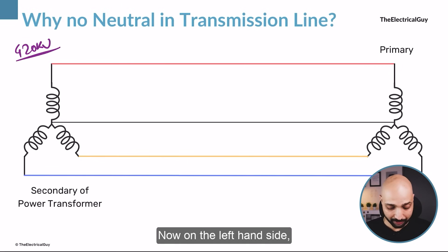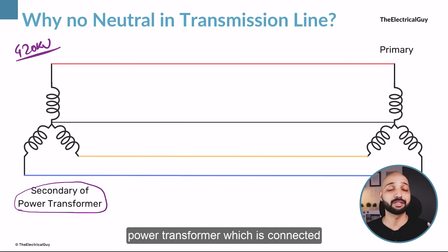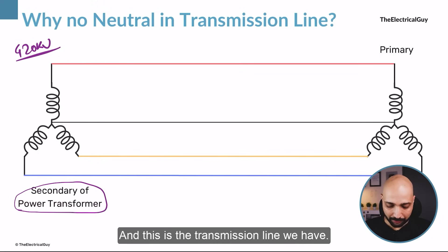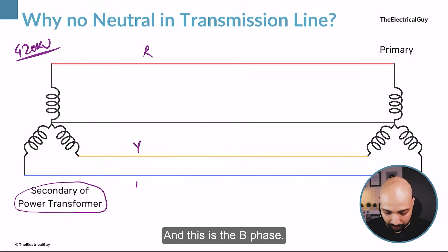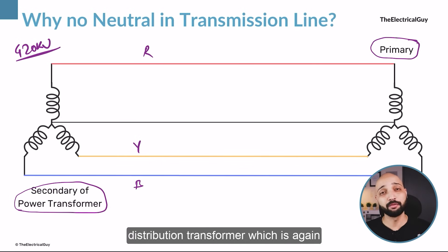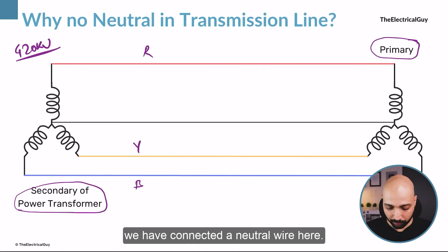On the left-hand side, what you can see is the secondary of the power transformer, which is connected in the star manner. This is the transmission line — we have the R phase, the Y phase, and the B phase. On the right-hand side, what you can see is the primary of the distribution transformer, which is again connected in the star manner. For now, we have connected a neutral wire here.